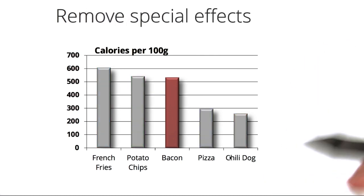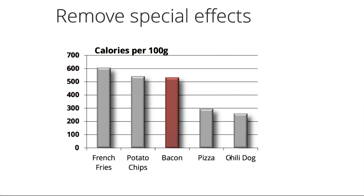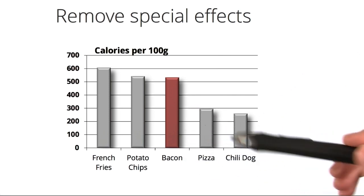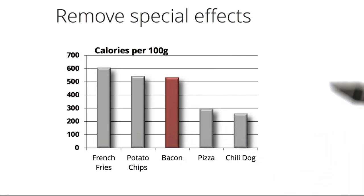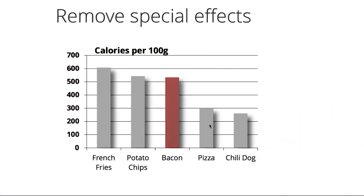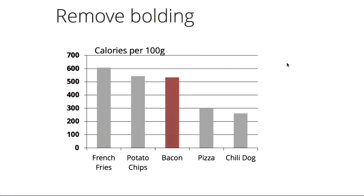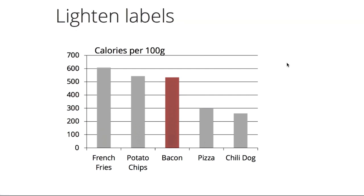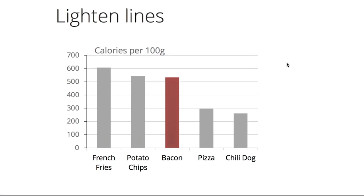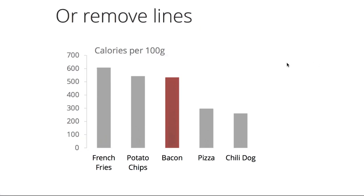We've already improved the data-to-ink ratio quite a bit, but there's more that we can do. Recall that 3D graphs, including gradients and shadowing, can be misleading, so let's flatten out those bars and remove the drop shadows to make it more clear. We can also make the data stand out by reducing the boldness of the labels and the grid lines. If we want to go even further, we can remove the lines entirely and encode the values directly into the bars themselves.